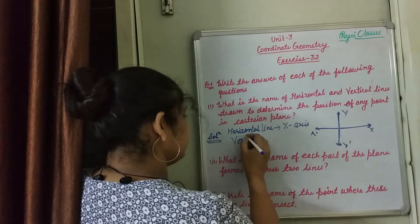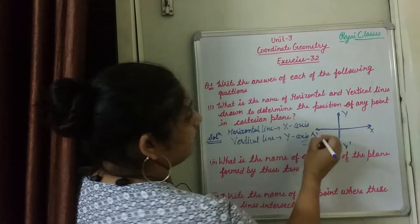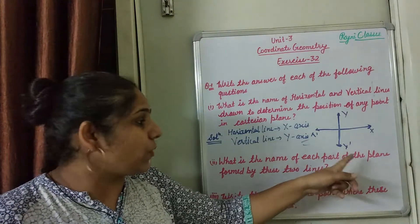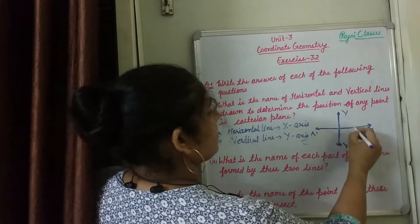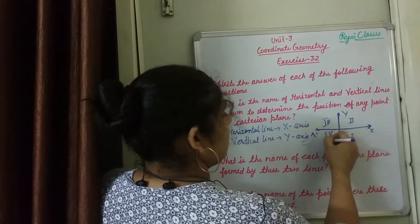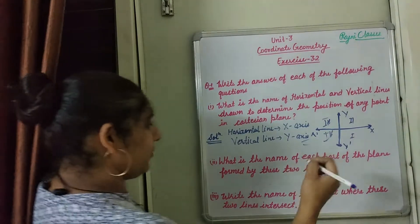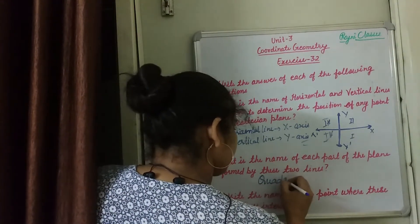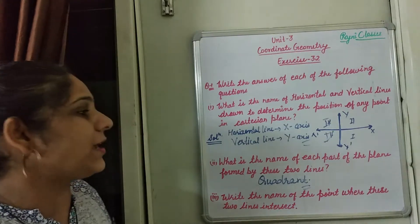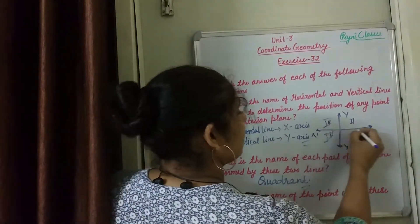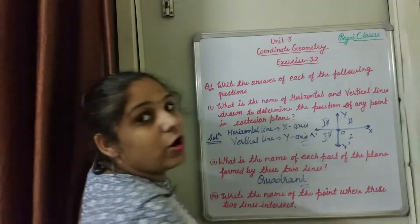What is the name of each part of the plane formed by these two lines?